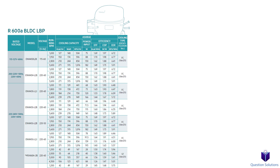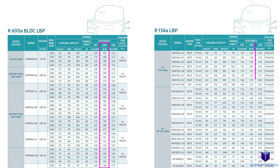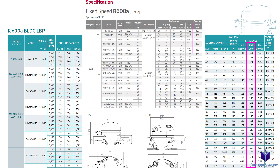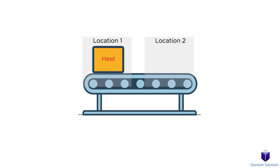Keep in mind that COP values can be greater than 1. In simple terms, the amount of heat removed from the refrigerator space can be greater than the amount of work input. We're moving heat from one location to another, and to move that heat requires some energy. The keyword being 'move.' This is why COP values can be greater than 1, because a small amount of work can move a large amount of heat.